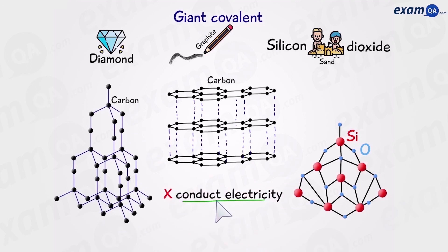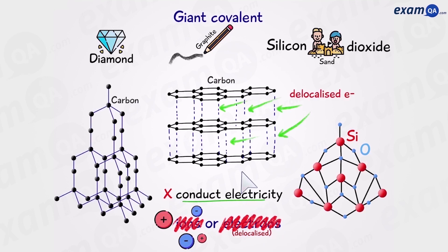Also, they don't conduct electricity. And once again, we need ions or free electrons. We don't have ions in covalent bonding. And also, we don't have free electrons either. Except for graphite. Graphite is the only giant covalent structure that has free or delocalized electrons floating between the layers of hexagonal rings.